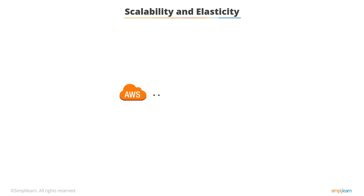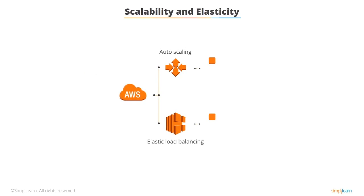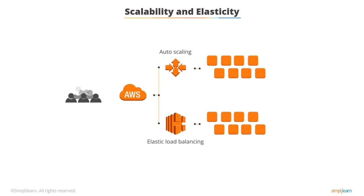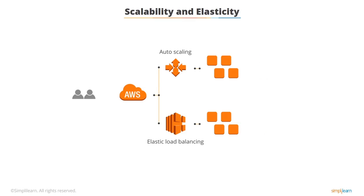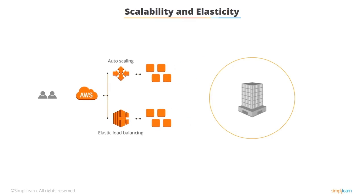Through AWS, techniques such as auto scaling and elastic load balancing can automatically scale resources. They scale up the required resources to fulfill a sudden demand and then scale them down when demand falls, without affecting speed and performance. These AWS techniques are ideal for dealing with unpredictable and variable loads, resulting in reduced cost and increased user satisfaction.